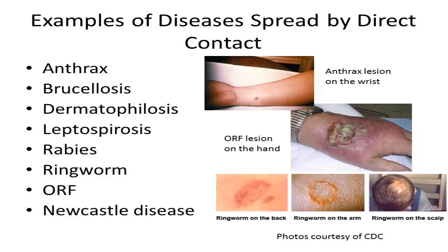Direct contact with saliva or central nervous system tissue would need to occur in order for a person to be considered potentially exposed to rabies. It's important to remember that if you develop symptoms that could be due to a zoonotic disease, to tell your doctor about any animal contact you have had, since this might be helpful in figuring out the cause of your illness.